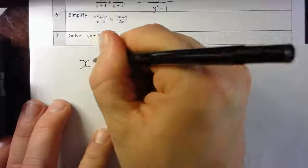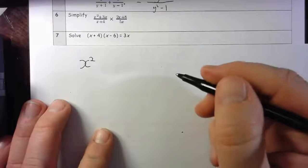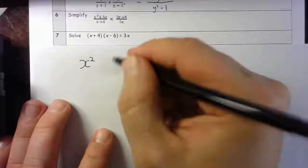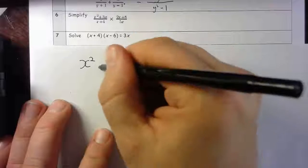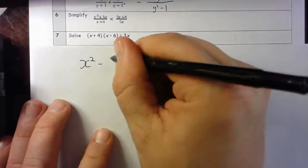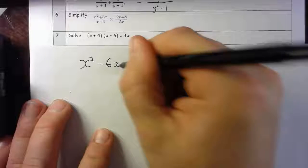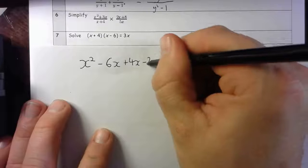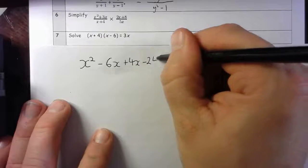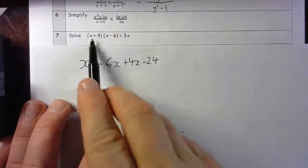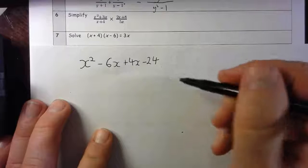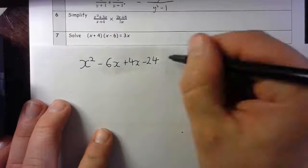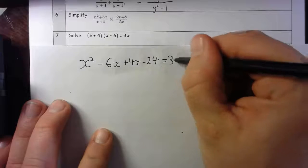So let's have a go at that. x squared first, let's do the FOIL method. You can use a grid method, that's fine if you want to. Minus 6x plus 4x minus 24. Careful with the negatives—that's plus 4 times minus 6, so gives me minus 24 equals 3x. Haven't done anything to the other side.